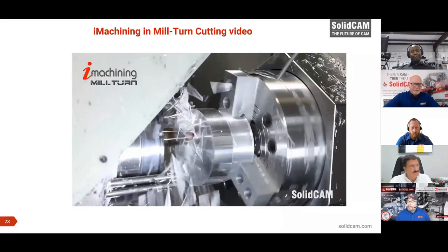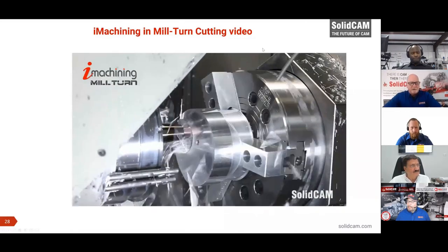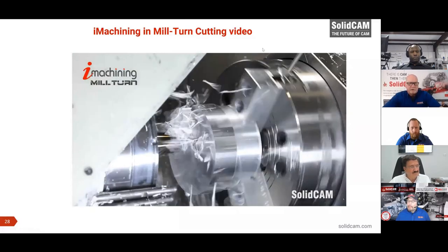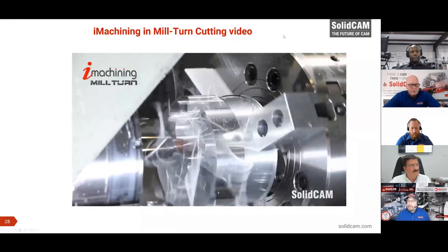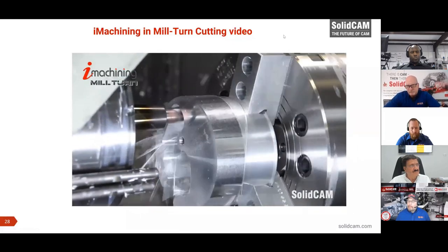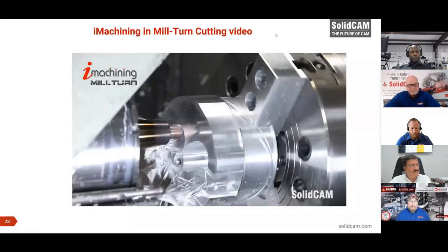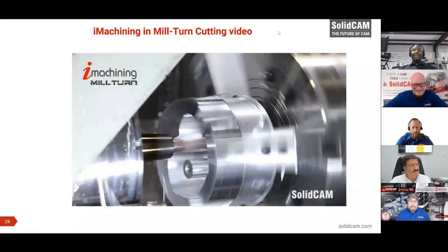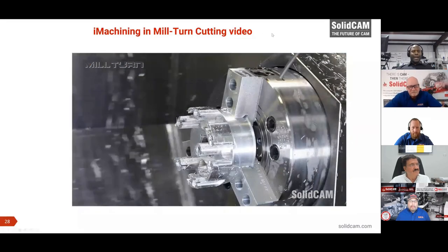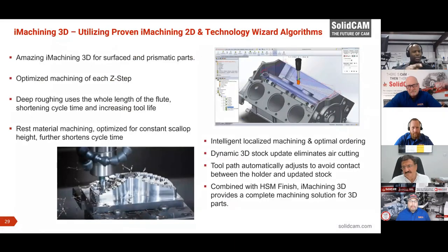Kelvin confirms he uses iMachining on titanium. SolidCam has done titanium ink canals and extremely exotic materials, removing material faster than anything seen before, with tool life multiple times longer than you'd believe. The XZC motion is impressive, and SolidCam has a YouTube tutorial on a part just like that. iMachining 3D takes advantage of all the 2D technology and adds scallop control — critical for roughing 3D parts without leaving uneven staircases before finishing.